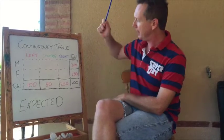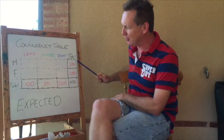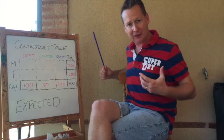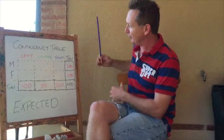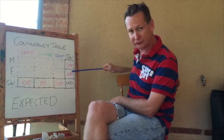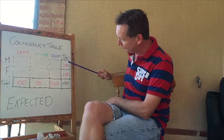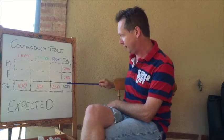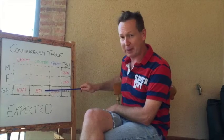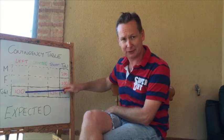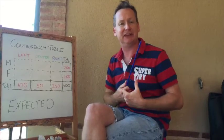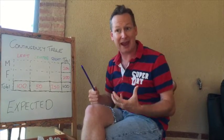Expected frequencies represent what we would expect to happen. What I have in my contingency table here are the totals of some possible responses. In this particular survey, I asked 200 men and 200 women — 400 people total. Of those 400 people, 250 were right-wingers, 50 had central politics, and 100 were left-wing. I have these marginal totals but not the actual cell figures of what happened. Now I can work on what I would expect those figures to be.